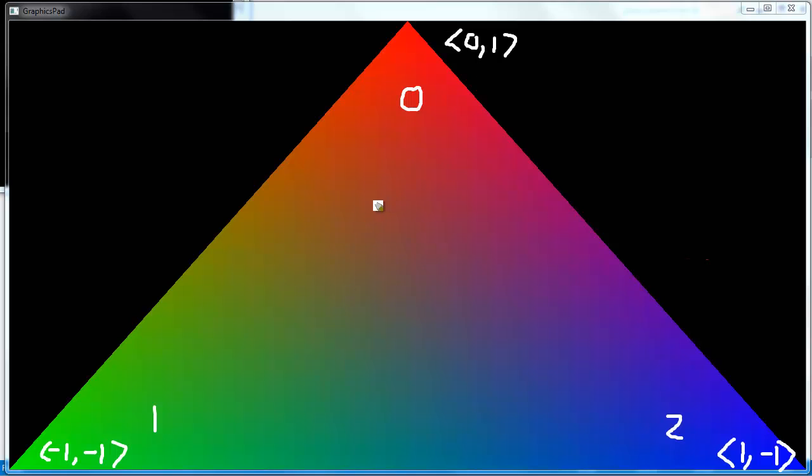So we'll take this vertex first. I'll say 0, 1. The next one is negative 1, negative 1. The next one is 1, negative 1. And then to complete our triangle or our polygon in this case, I have to put the first vertex again.